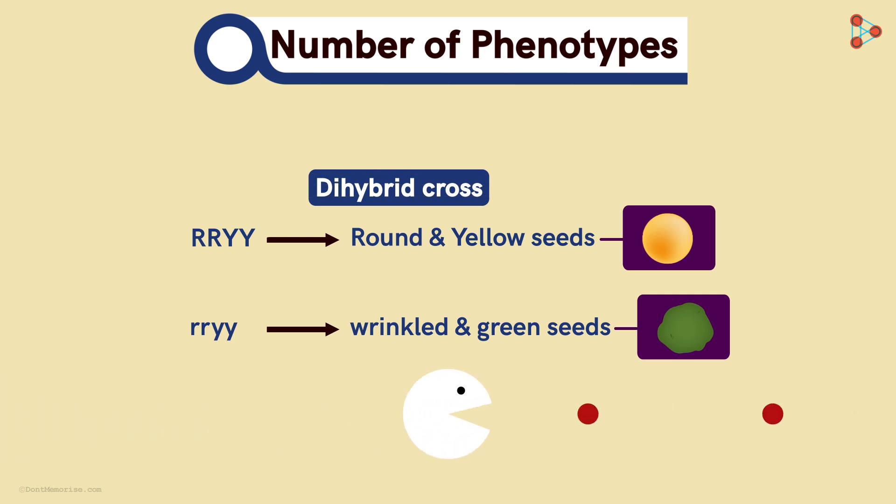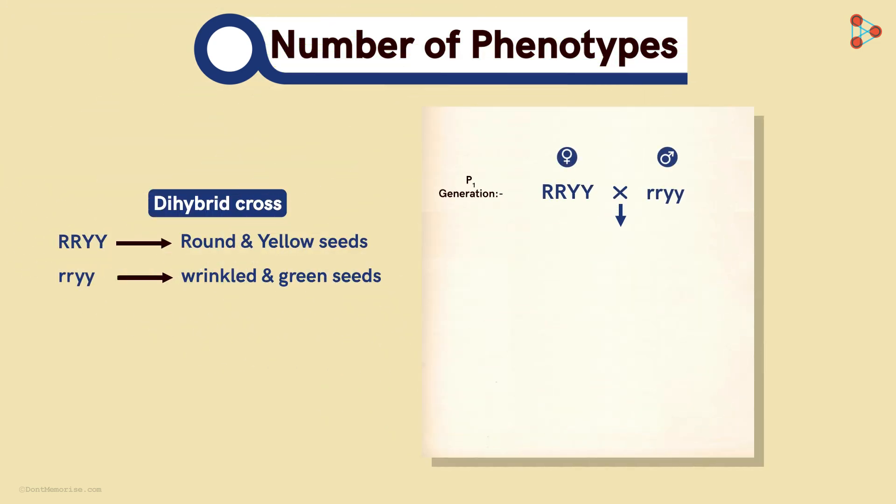Now let's get to the next step! We are supposed to calculate the number of phenotypes obtained! On crossing these, the F1 generation as we know, will always have all the dominant characters expressed! This is because the F1 hybrids are all heterozygous in nature! So there is just one phenotype of the F1 generation that is round and yellow in this case!